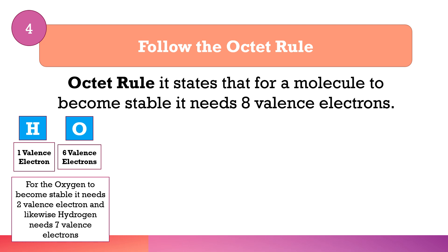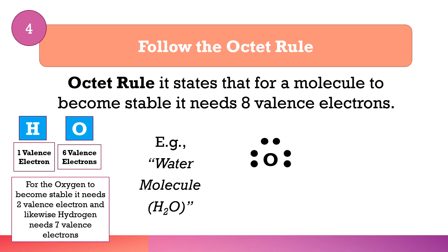Looking at the water molecule, you can see the Lewis structure with the six dots representing the valence electrons of oxygen, plus the two hydrogen atoms. You can see the formation of the octet rule — counting all dots equals eight, representing the eight valence electrons of oxygen. The two valence electrons are donated or shared by the two hydrogen atoms for oxygen to become stable.